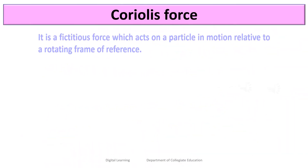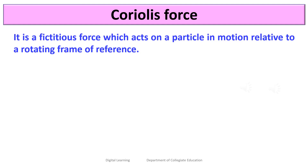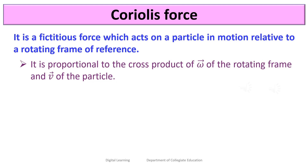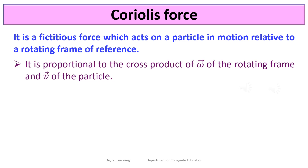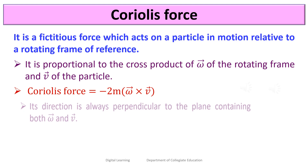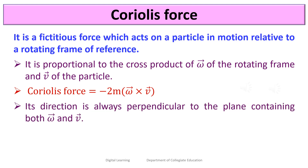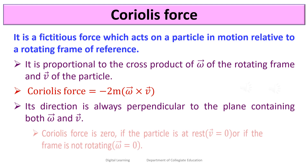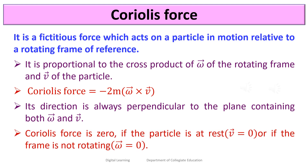Coriolis force is a fictitious force which acts on a particle in motion relative to a rotating frame of reference. It is proportional to the cross product of the angular velocity of the rotating frame and the velocity of the particle. The Coriolis force is given by minus 2m(omega × v). Its direction is always perpendicular to the plane containing both omega and v. Coriolis force is zero if the particle is at rest or if the frame is not rotating.